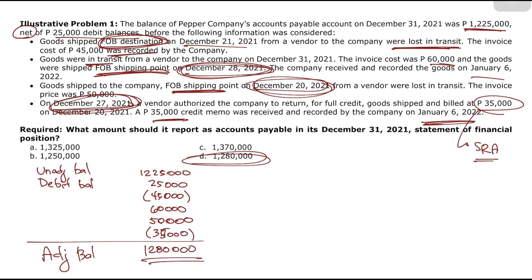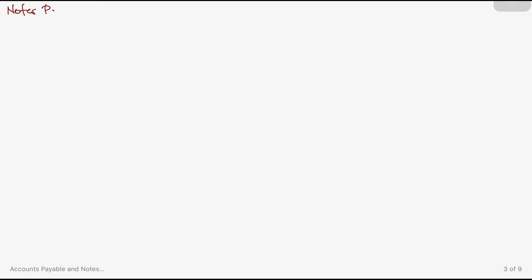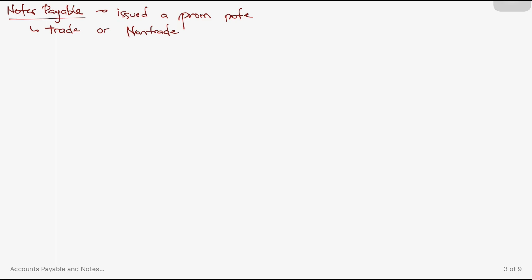Now let's move to notes payable. Notes payable arise when you buy goods and issue a promissory note. Unlike accounts payable which are always trade payables, notes payable may be trade or non-trade. For example, if you issue a promissory note when buying equipment, that's non-trade. If you issue one when buying inventory, that's a trade payable.